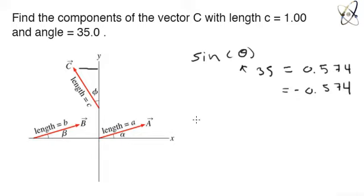And then from there you can find the other component here using cosine theta by plugging in 35. And you will get positive 1.9.